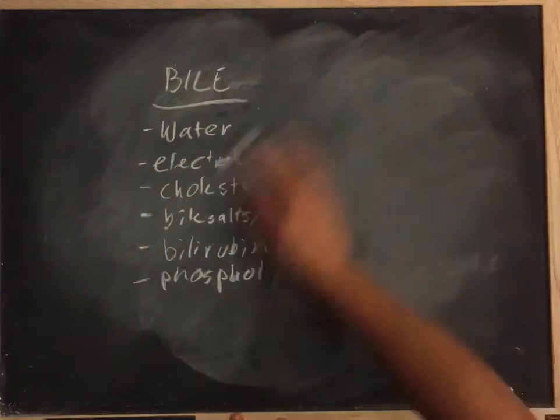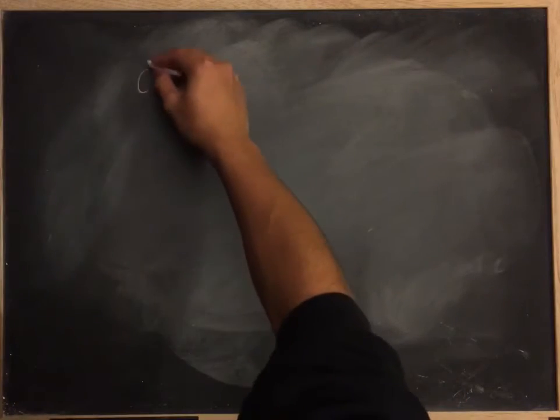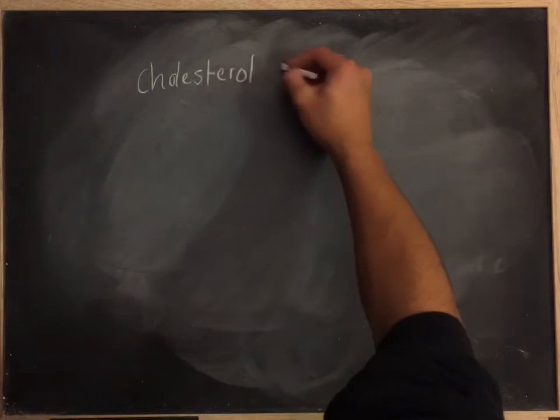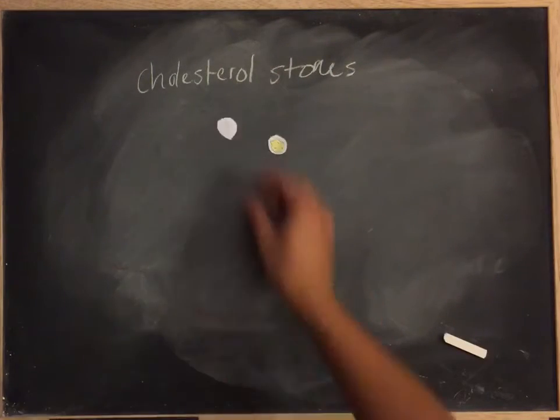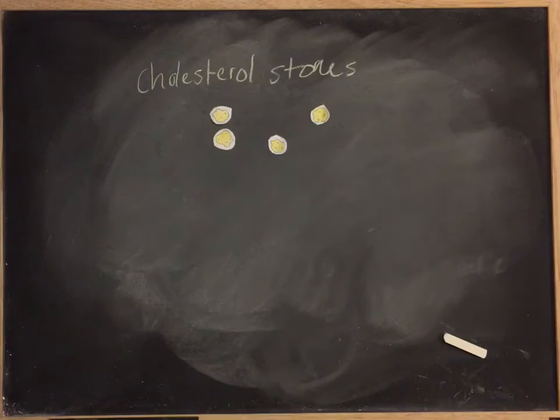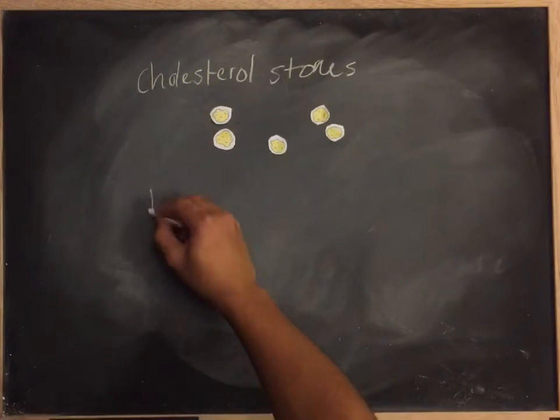Interesting to note though, bile salts and bile acids usually are synthesized from cholesterol. Now that we familiarize ourselves with bile and the organic molecules that make up bile, we can talk about gallstones.